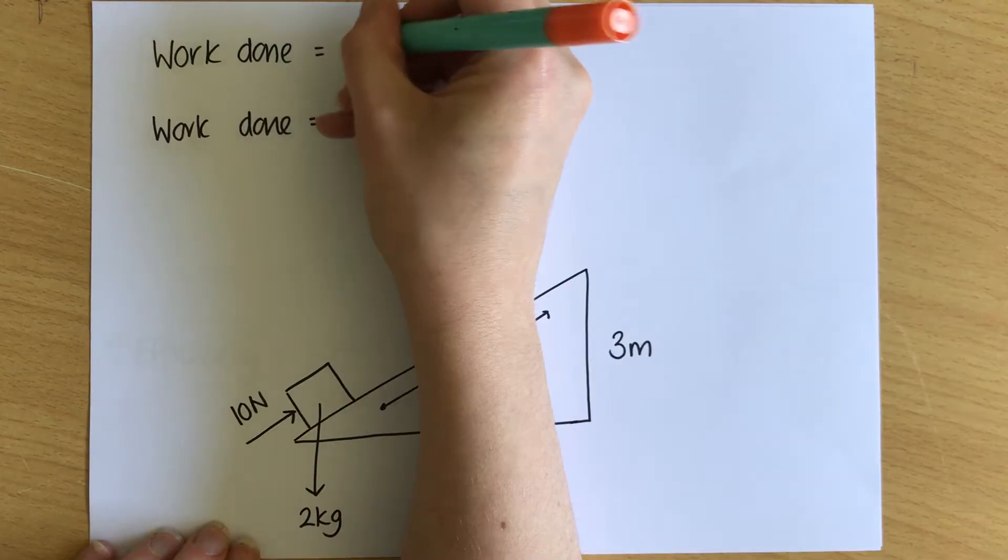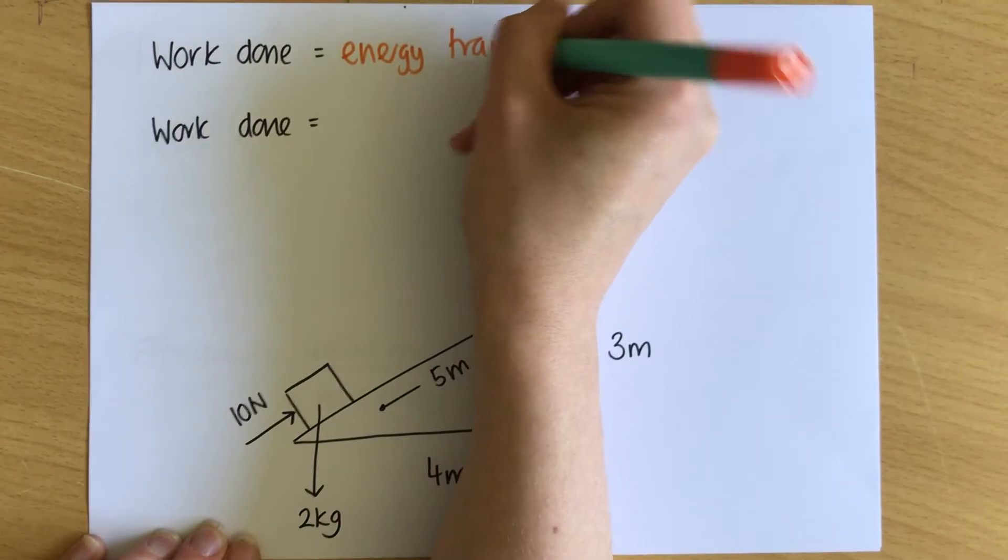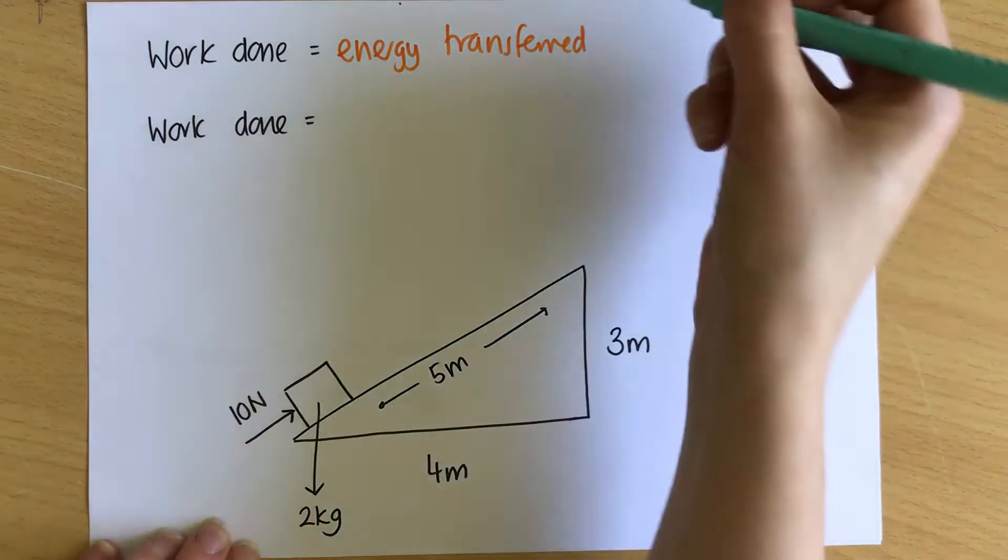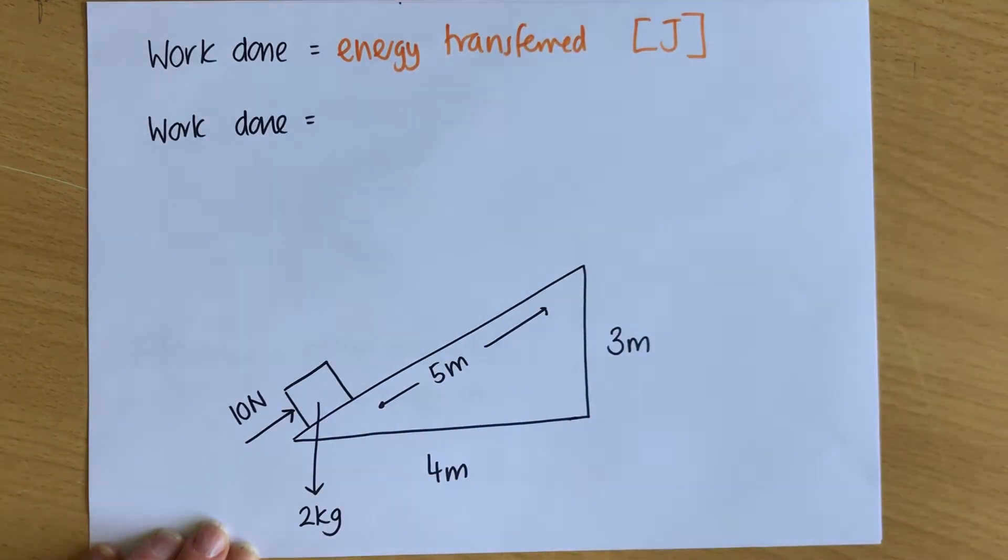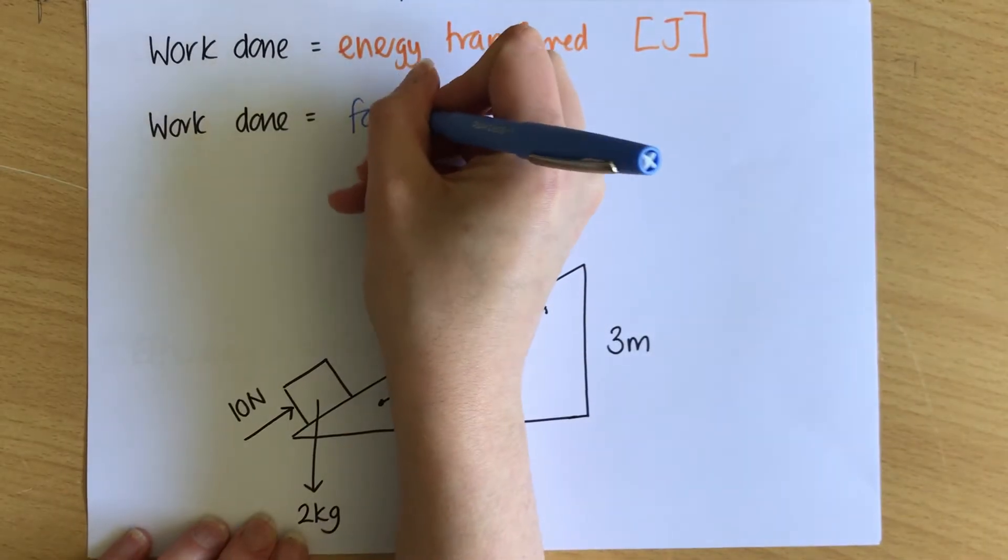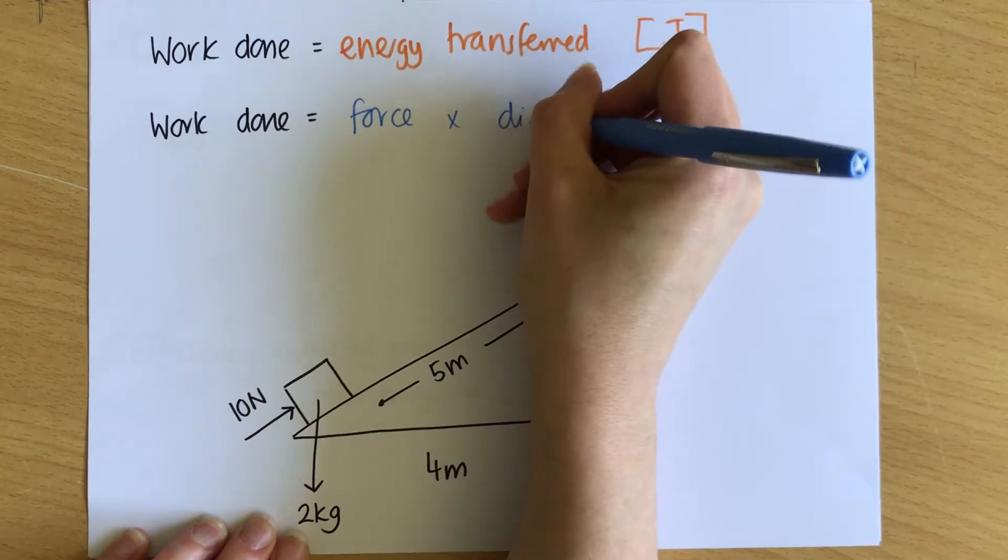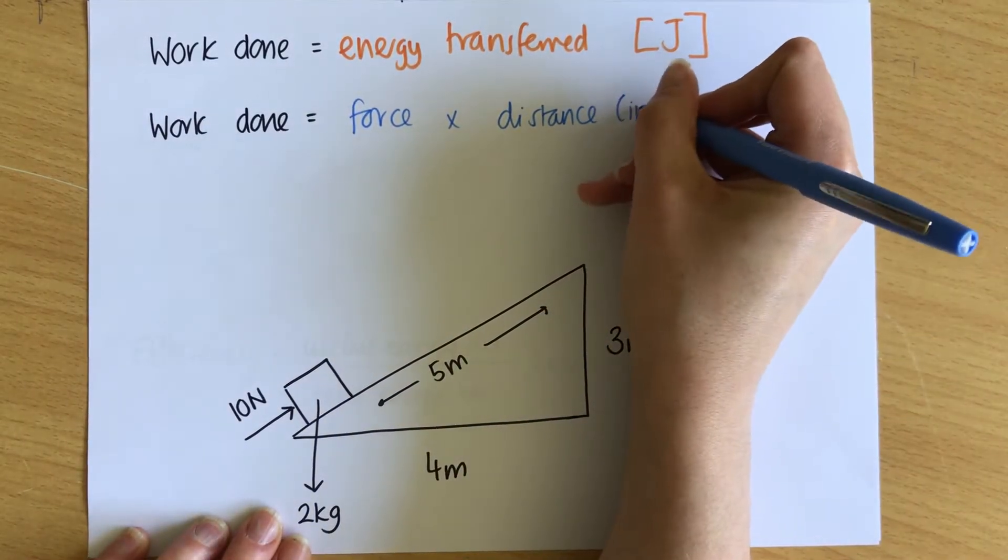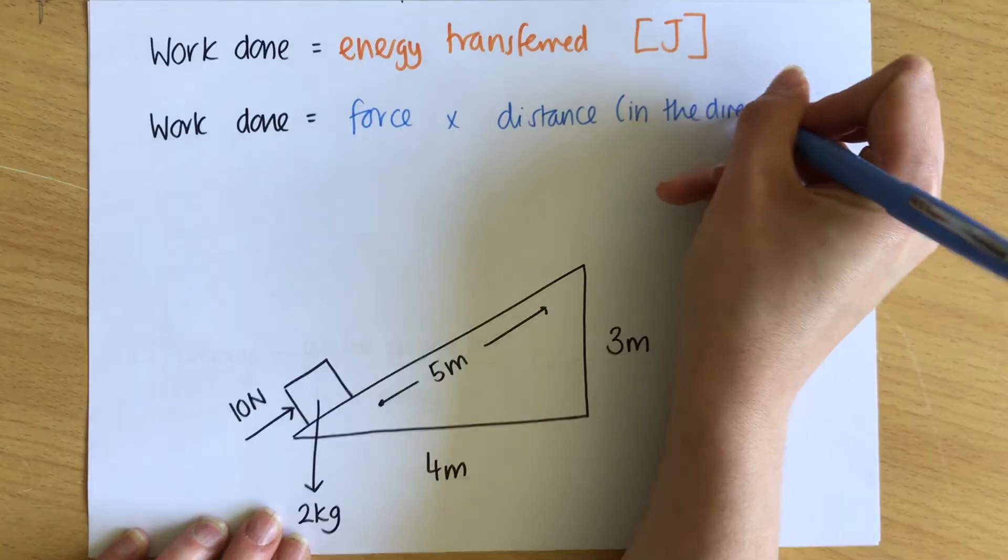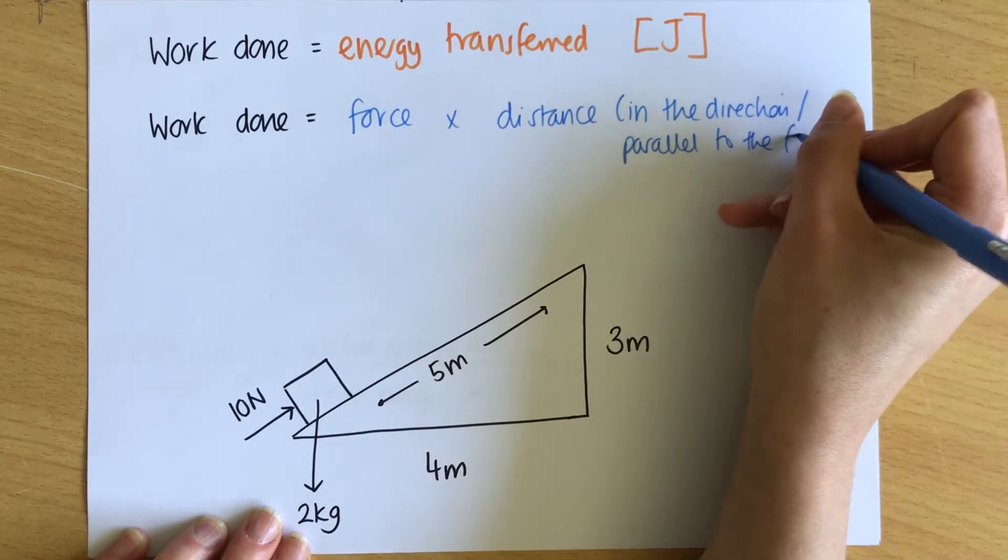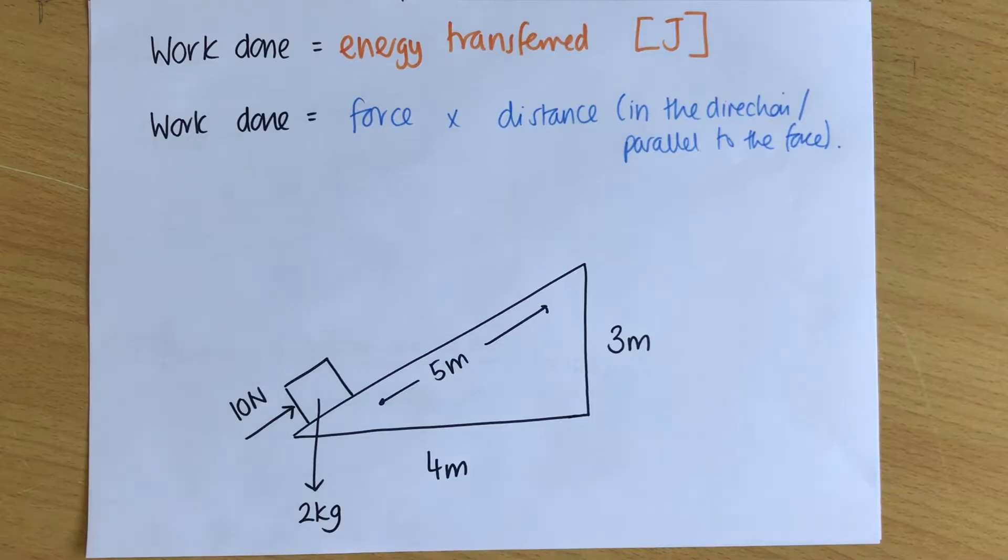Now work done is equal to energy transferred. Whenever energy is transferred, work is done. And that's because energy is simply the ability to do work. If these two things equal each other, they must have the same unit. So work done has the same unit of energy transfer, which is the joule. But there is an equation for work done, and that equation is simple but has a caveat. So work done equals force times distance. However, the distance is quite special. It's the force times the distance in the direction, or parallel is a better word to say parallel, to the force.